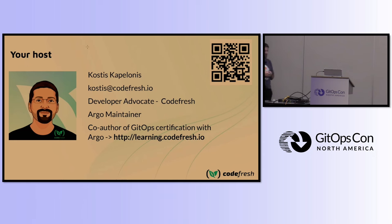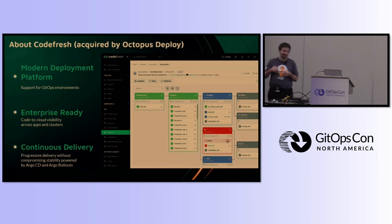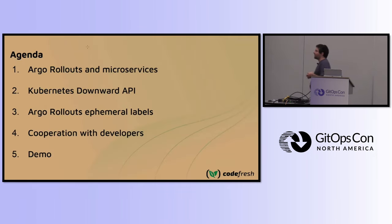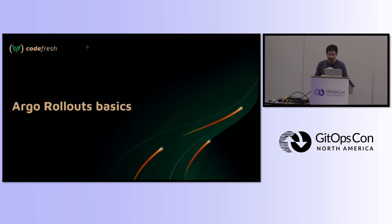I work for Codepress — an enterprise company with a commercial product on top of Argo CD, Argo Rollouts, Argo Events, and Argo Workflows. We have a booth outside if you want to know more, but this presentation will not be about Codepress. We're going to talk about Argo Rollouts and some problems with microservices — and there will be a demo as well.